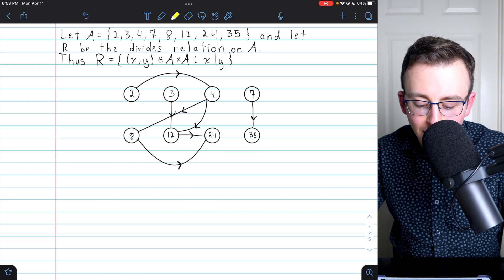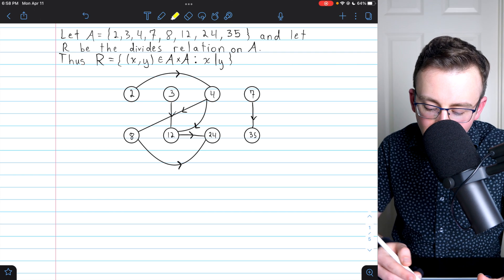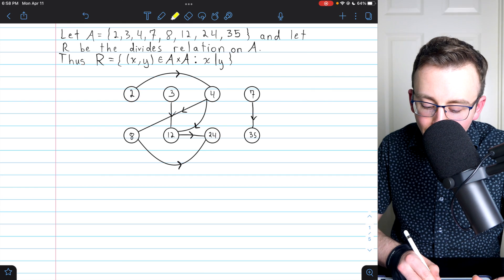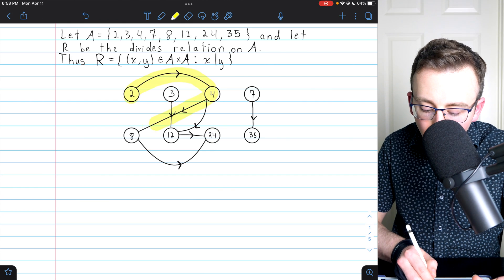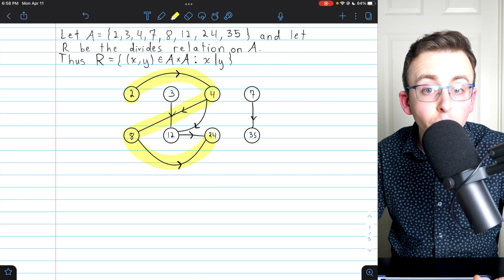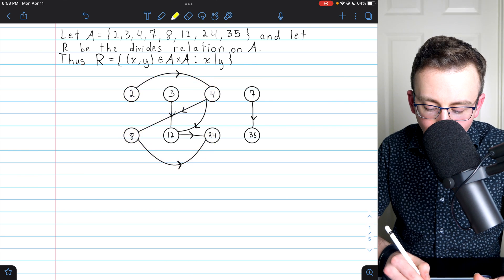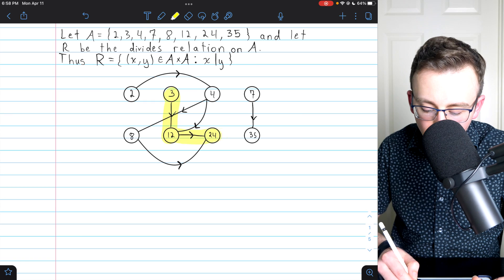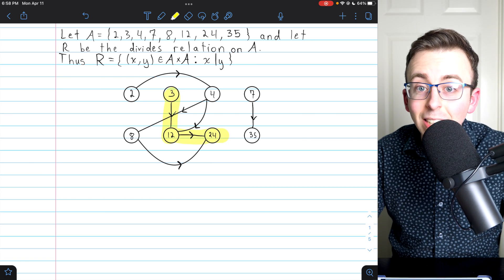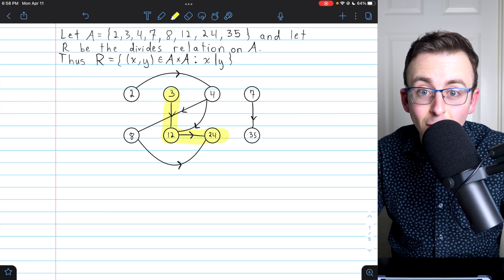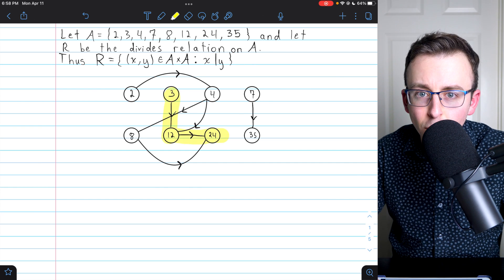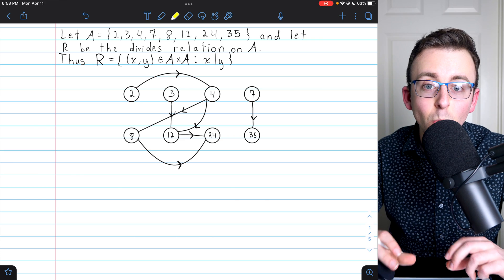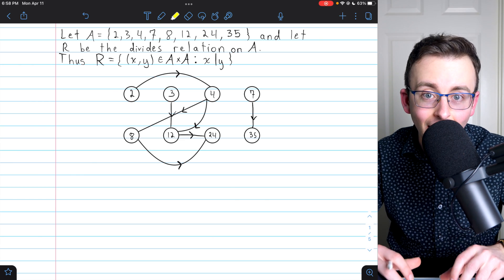I didn't need those transitive arrows anyway, right? I know that 2 divides 24, and now in my diagram, that's represented by the fact that I can travel along the directed edges from 2 to 24. I know 3 divides 24, because I can go from 3 to 24 by traveling along the directed edges. Traveling along those edges is really just applying transitivity. There's one more really cool thing we can do to finally make this a Hasse diagram.